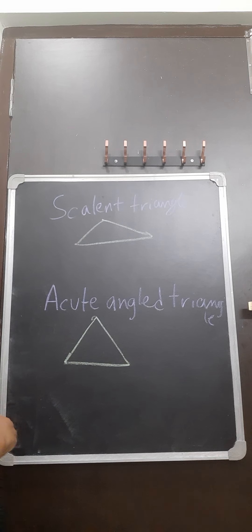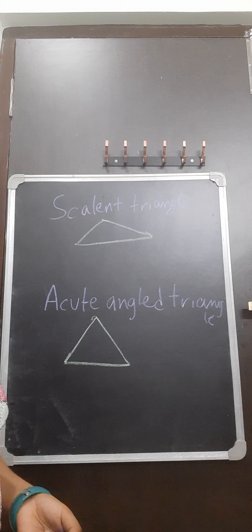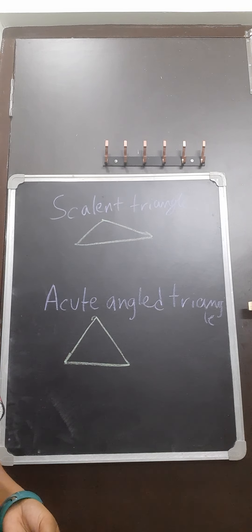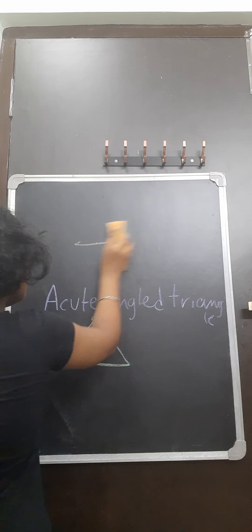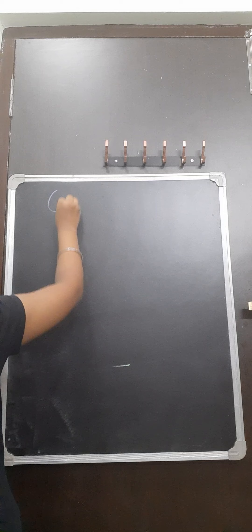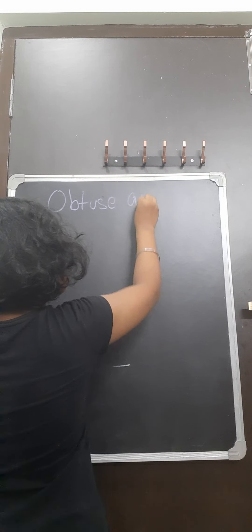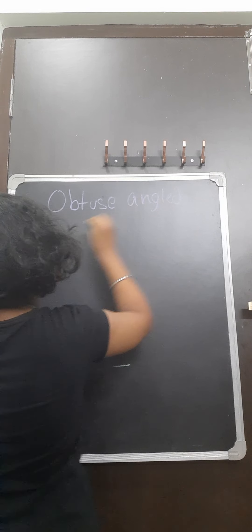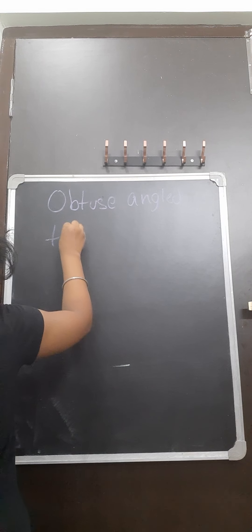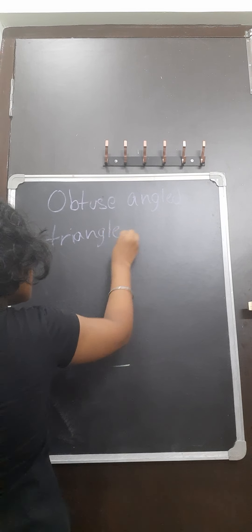Next, Acute Angle Triangle. So if you have seen my last video, you would understand what is an Acute Angle. Angle measuring between 0 to 90 is known as Acute Angle. So this triangle, all the angles of this triangle are Acute Angle. So when all the angles of a triangle are Acute Angle, those types of triangle are known as Acute Angle Triangle.